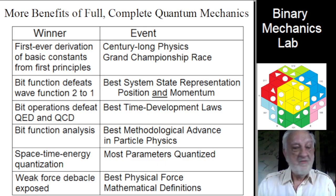Next, we have the best system state representation of position and momentum simultaneously in the bit function. So, the bit function defeats the quantum mechanic wave function two to one.